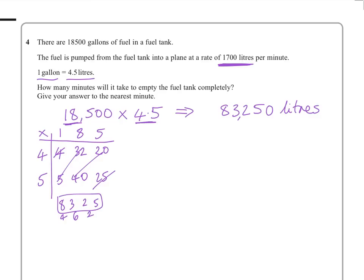And then it says that fuel is pumped from the fuel tank into the plane at a rate of 1,700 liters per minute. So the idea behind this now is to test your division skills, and of course you can use the calculator, that's what it's for. So if we do 83,250 and we divide that by 1,700, then you can use the calculator.